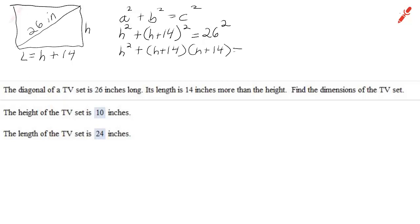Notice h plus 14 is a binomial so you have to foil it. You can't just say h squared plus 14 squared, although that's tempting. Now we're going to have to first outside inside last. 14h plus 14h is 28h and 14 times 14 is 196.